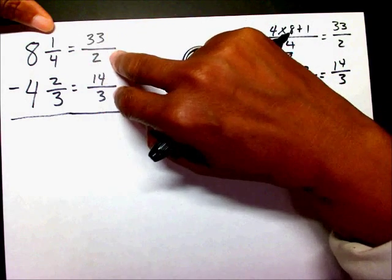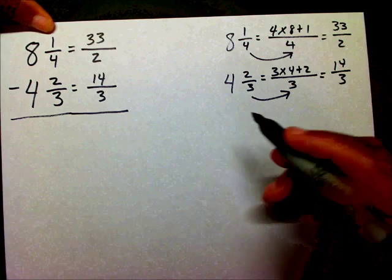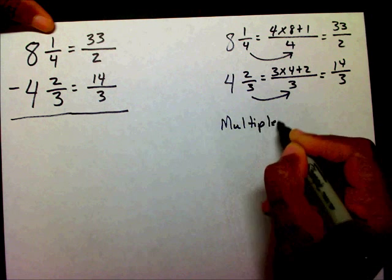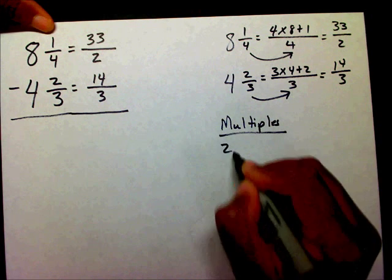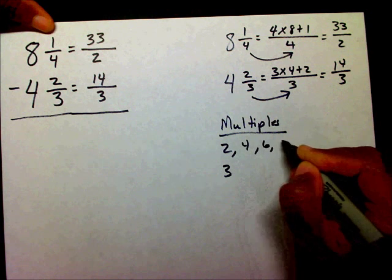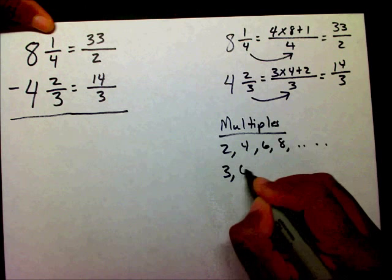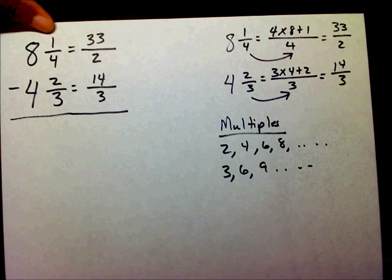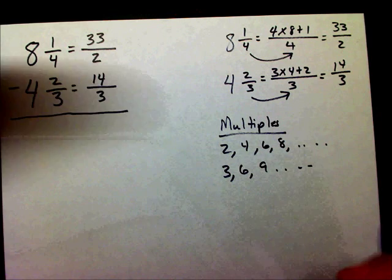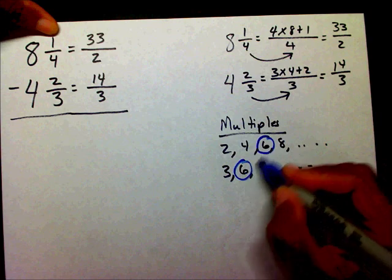We still can't subtract because our denominators are not the same. So I'm going to list my multiples for 4 and 3: 2, 4, 6, 8, and so forth for the first, then 3, 6, 9, and so forth. Well, what do they have in common? They have a 6 in common. So 6 is going to be our new denominator.